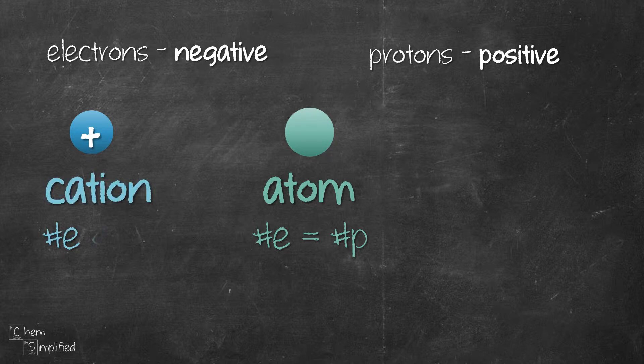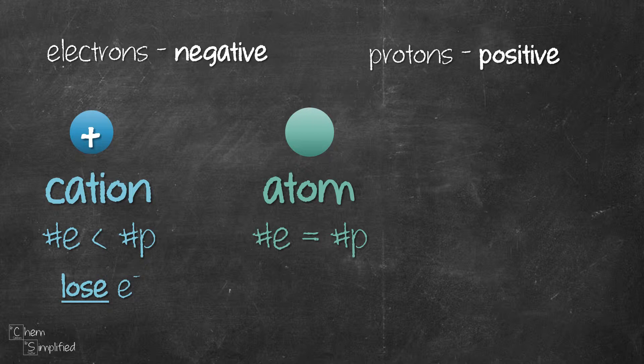In a positively charged ion, which is called a cation, there are fewer electrons compared to protons. This is because in order to become positive, the atom will donate or give away or lose some of the electrons.